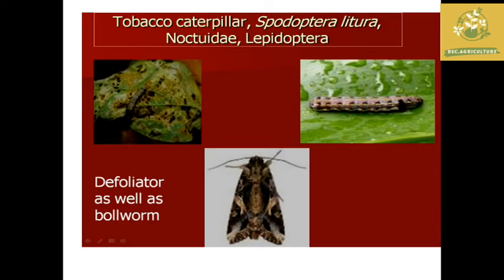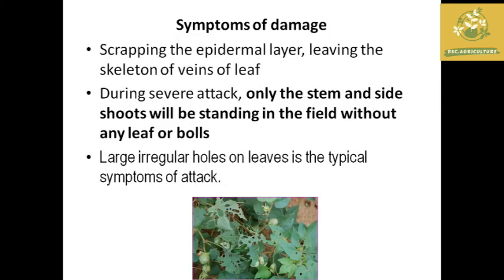The next pest is tobacco caterpillar, one of the serious pests in cotton. The scientific name is Spodoptera litura, under family Noctuidae and order Lepidoptera. It acts as both a defoliator and a boll worm in cotton. During severe attacks, only the stem and side shoots remain standing without any leaves or bolls.